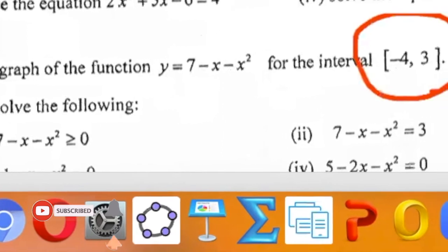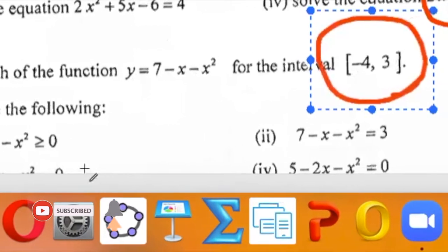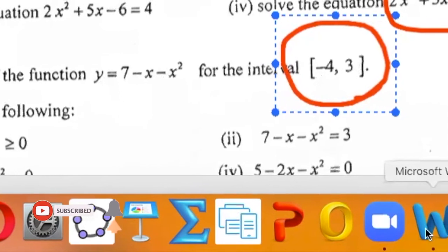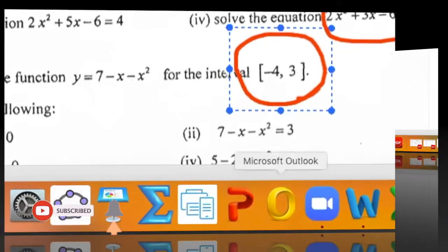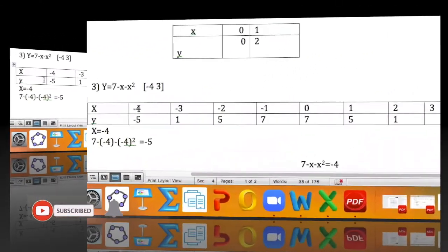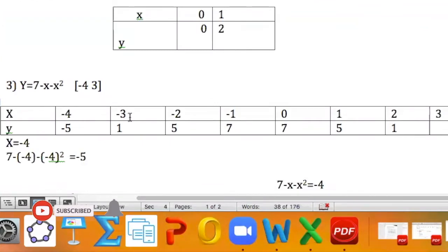Just remember these are the values that you're going to put in your table for x. So your x values, negative 4, negative 3, negative 2, negative 1, 0, 1, 2, 3 are coming from the range that was given in the question, which is negative 4 to 3.